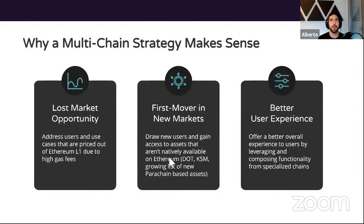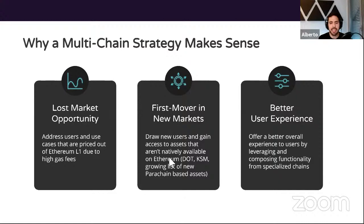Why does a multi-chain strategy make sense? The first point is a lost market opportunity. For example, if you're a project that wants to roll a dice on-chain for transparency in an online game, doing that with a VRF on Ethereum L1 could cost $20–$40. Your use case gets priced out because of high gas fees. In a multi-chain strategy, you might deploy to a different chain where it makes more economic sense. The second point is being a first mover in new markets — you can draw new users and gain access to assets not natively available on Ethereum.